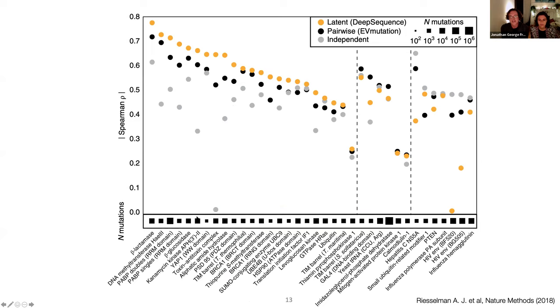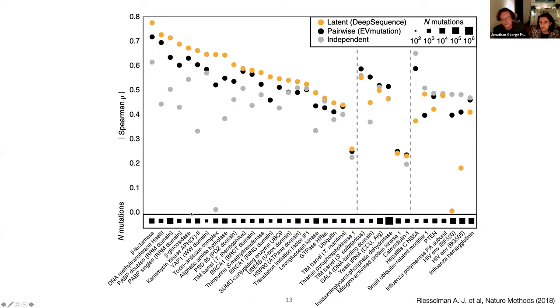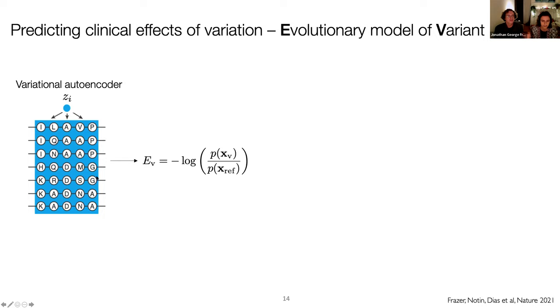Nevertheless, when we benchmark the model using the deep mutational scans, we find that once again, the model consistently outperforms the previous state of the art. So building from this, we asked, how can we use these models for asking the question of predicting the clinical effects of genetic variation. And because of what Johnny was just saying, we built from a variational autoencoder. So we optimized a variational autoencoder specifically, we just built a new version that is optimized for this specific question that we have at hand. And out of it, we get these evolutionary indices, that's what we call in our model.